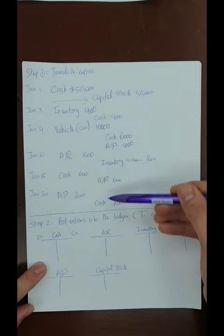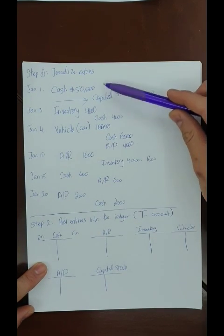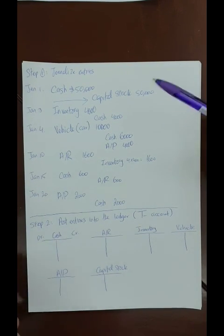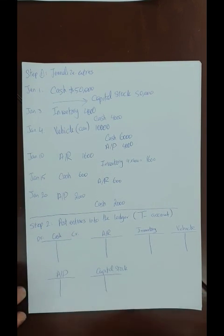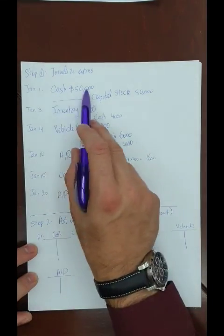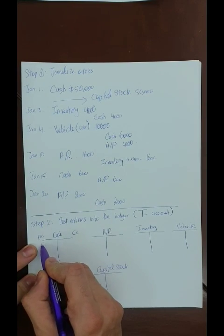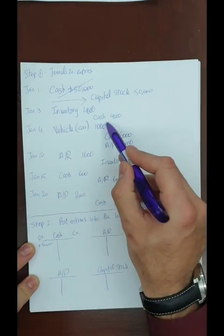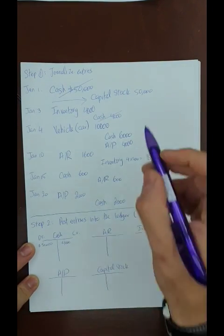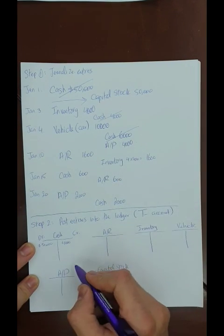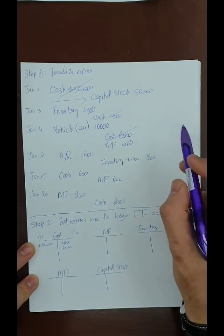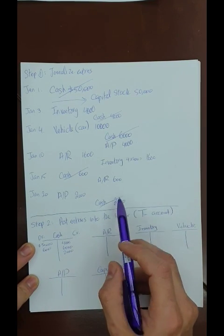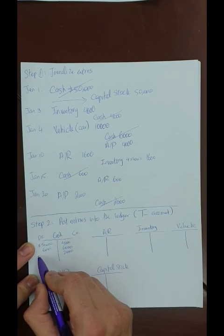In real life you might have thousands or millions of transactions per financial cycle, so T-accounts provide a summary — showing you, for example, how much cash remains after all operations. For cash: debit $50,000 (Jan 1), then credits of $4,000 (Jan 3), $6,000 (Jan 4), and $2,000 (Jan 20); and a debit of $600 (Jan 15). The balance of cash is $50,600 − $12,000 = $38,600.